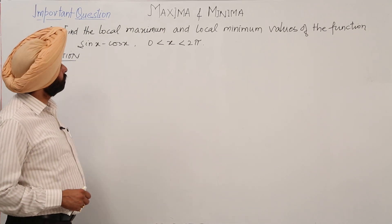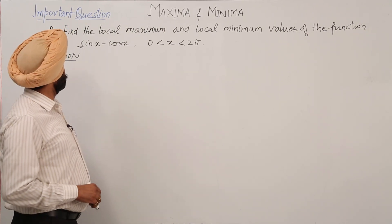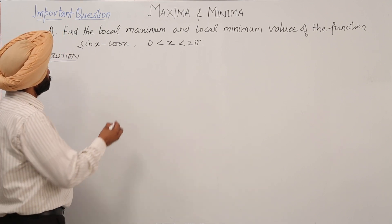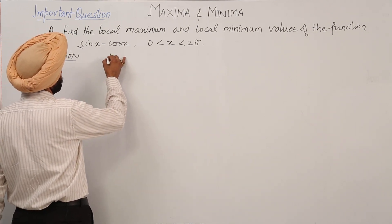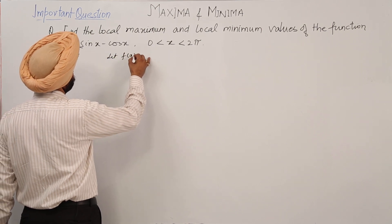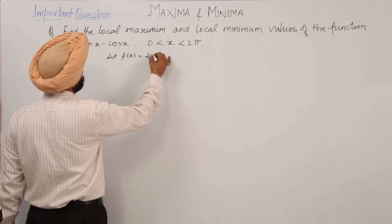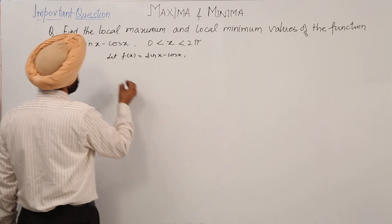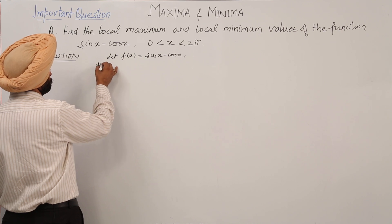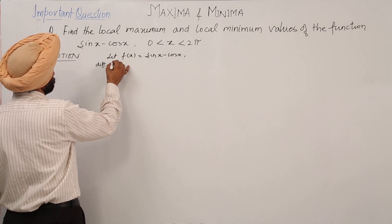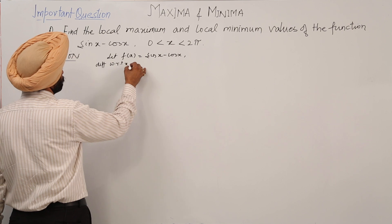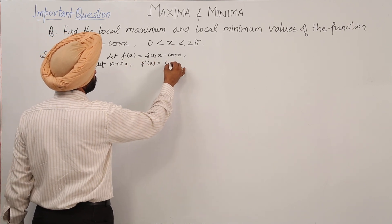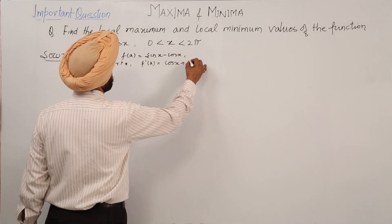Find the local maximum and local minimum values of the function sin x minus cos x. Let f(x) = sin x minus cos x. Now, differentiating with respect to x, f'(x) is equal to cos x plus sin x.